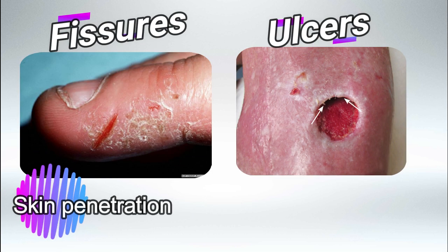Other secondary lesions include fissures and ulcers — they both penetrate the skin to the deep layers. Fissures are usually cut-like in shape and ulcers are circular in shape.